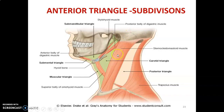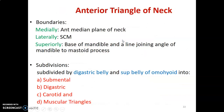The quadrilateral space is divided into anterior and posterior by the sternocleidomastoid. Any part of the quadrilateral space anterior to the anterior margin of the sternocleidomastoid muscle is the anterior triangle of the neck. The boundaries of the anterior triangle are: medially the median line, posteriorly the anterior border of the sternocleidomastoid muscle, and superiorly the base of the mandible and a line joining the angle of the mandible to the mastoid process.